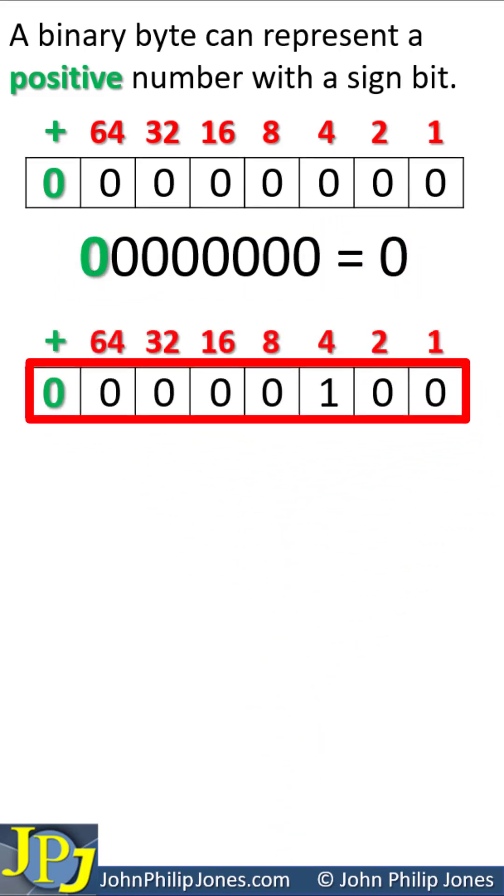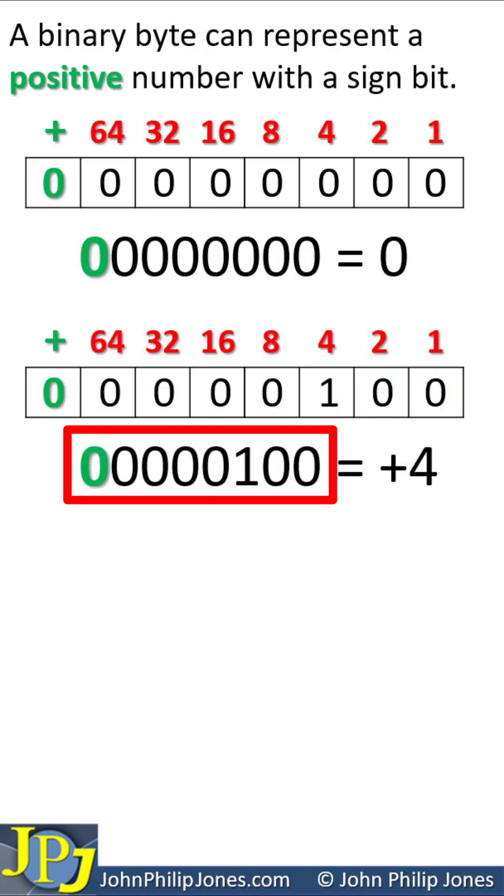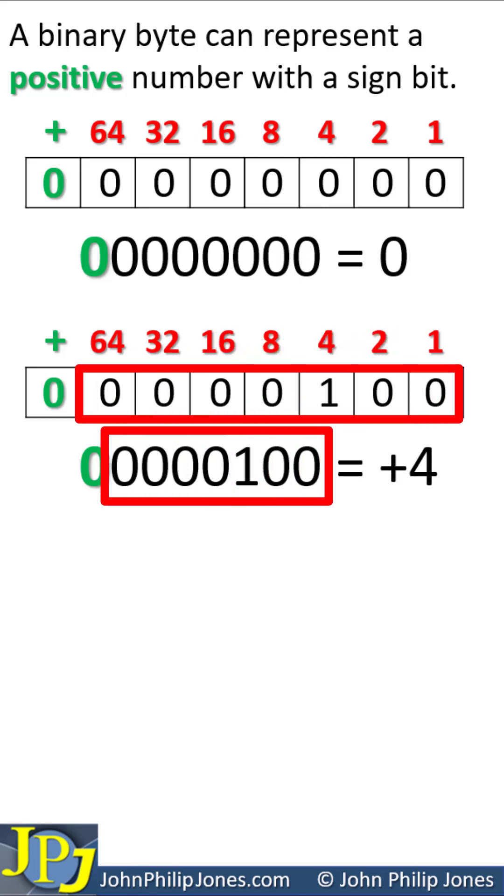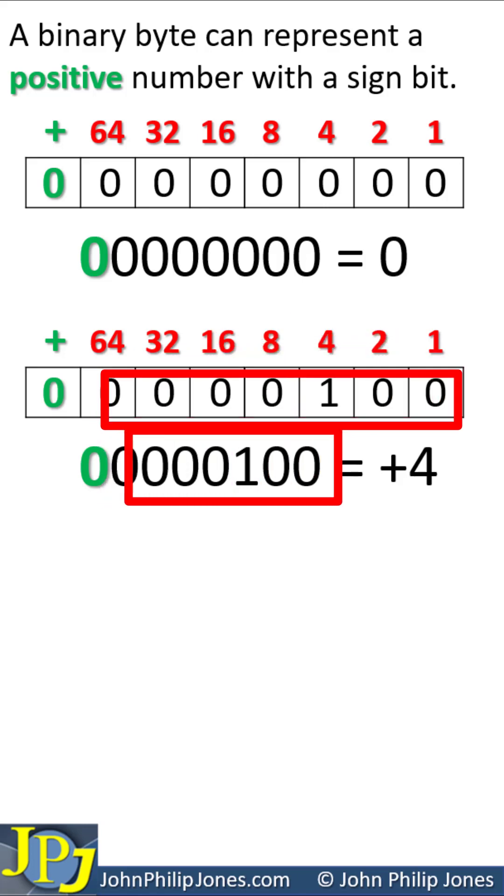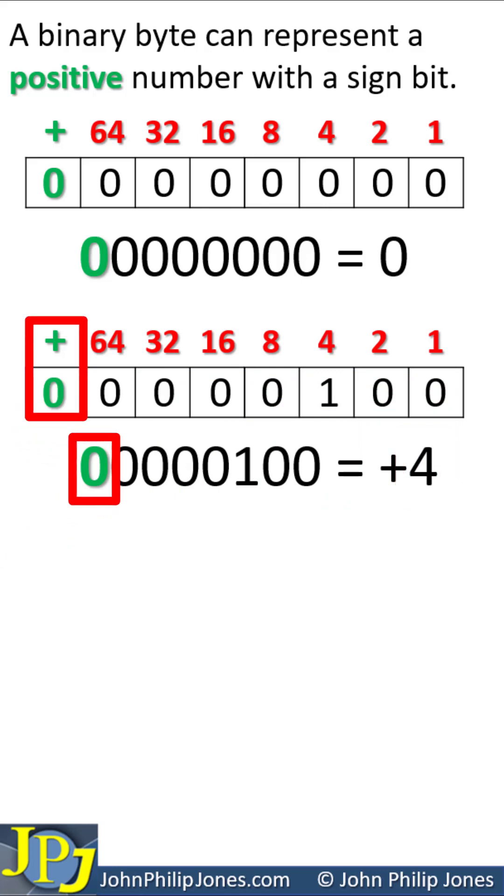If you consider this binary number which I've written down below, you can see here we have 1 in the 4 position, so all of this is equal to 4, which I've written down here. And this 0 means we have a plus sign, which you can see here.